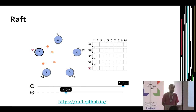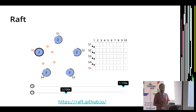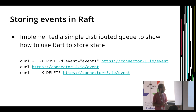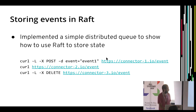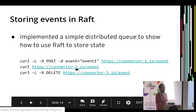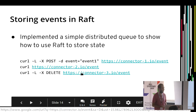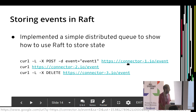If you want to learn more about Raft, there are good resources online, including a page with nice visualizations and explanations, and of course the Raft paper, which is pretty good. I implemented a simple queue — you send an event to one member, and you can read it from another member and see the same event. You can also delete events. That's basically the toy API we implemented.